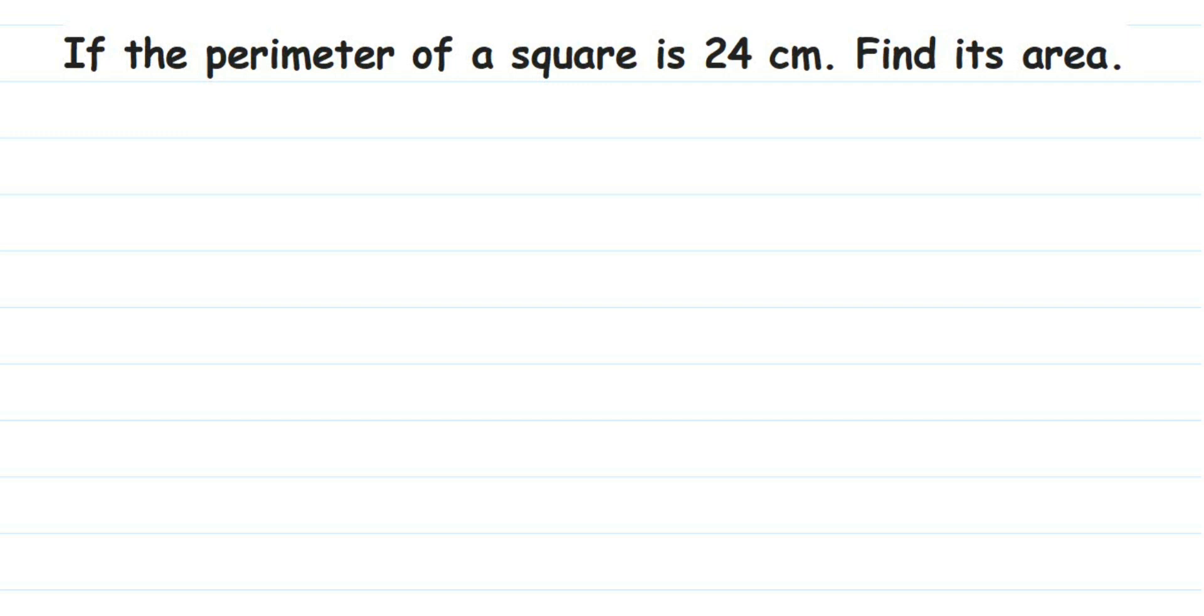Hello everyone, here is a question on square. The question is: if the perimeter of a square is 24 centimeter, find its area. So what is given? They have given the perimeter of square which is 24 centimeter, and we have to find out the area. And we know that to find out the area we should know the side.